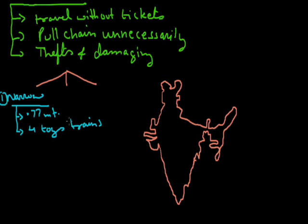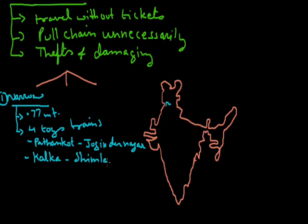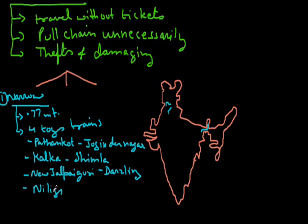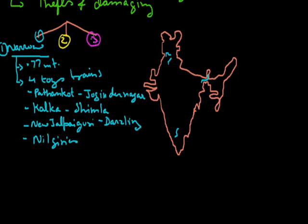You can see these in the map. The first one is the Pathankot to Jogindranagar in Himachal Pradesh. This is the route from Pathankot to Jogindranagar which is in Mandi district of Himachal Pradesh. The next one is from Kalka to Shimla near Chandigarh, Kalka, Solan to Shimla. Another one is from New Jalpaiguri to Darjeeling. Here from New Jalpaiguri to Darjeeling, and the fourth one which is also called the Nilgiri's railway.